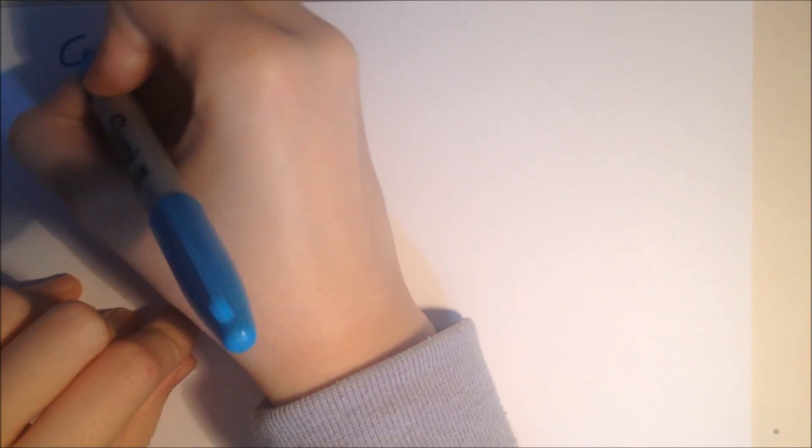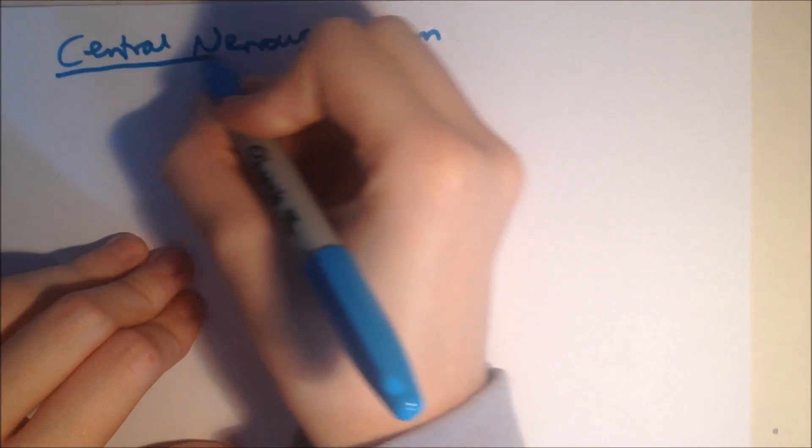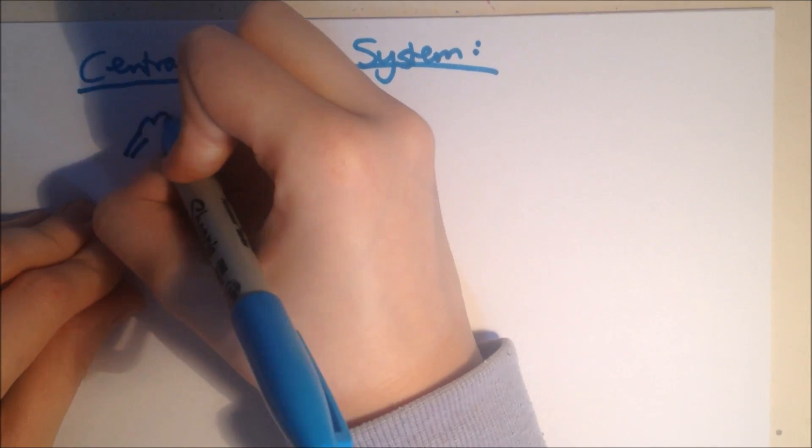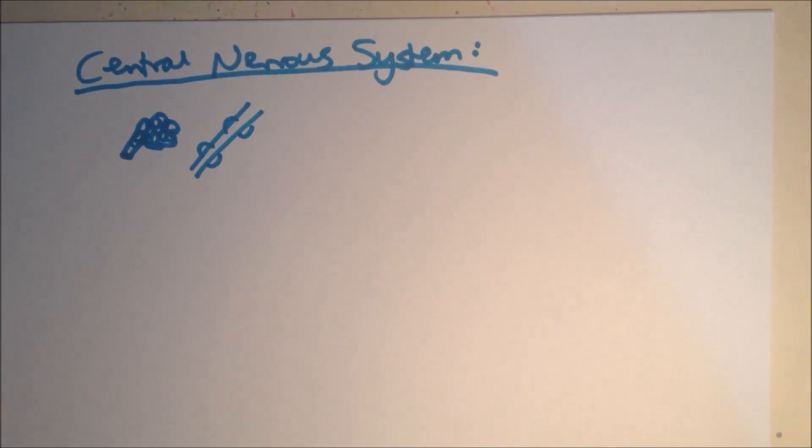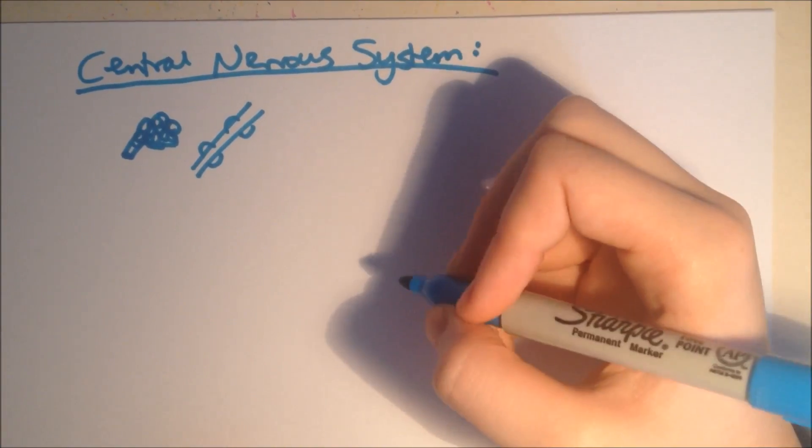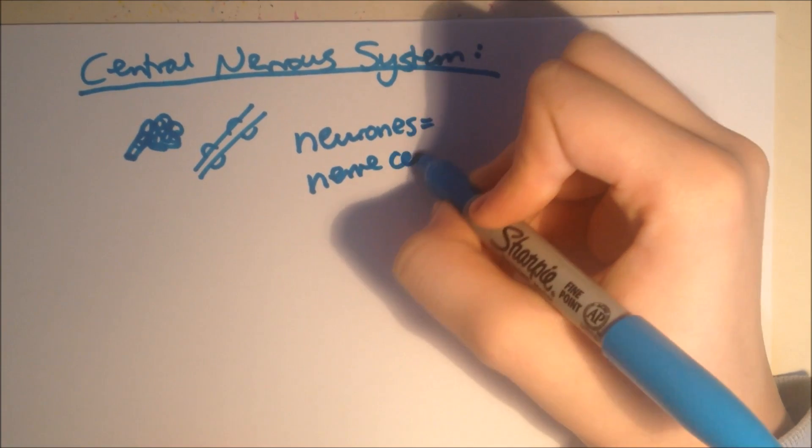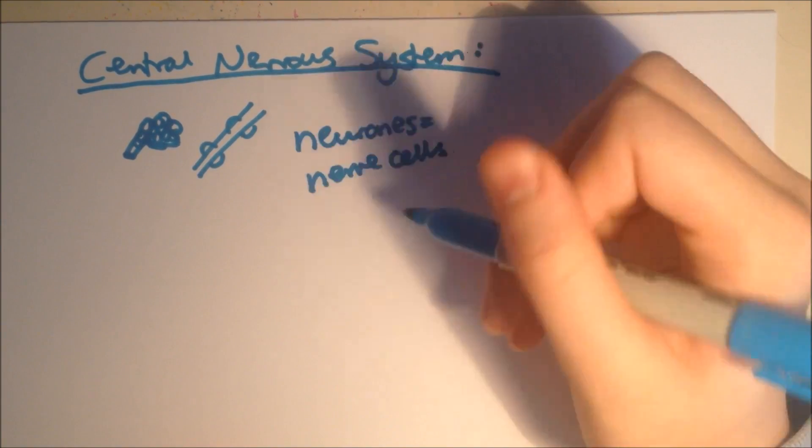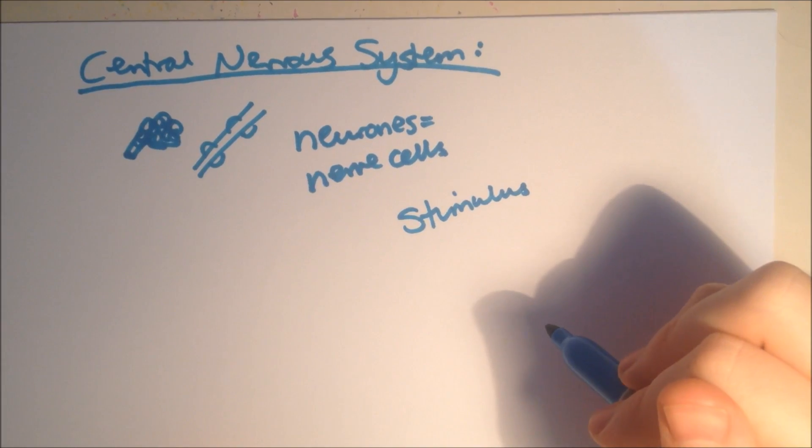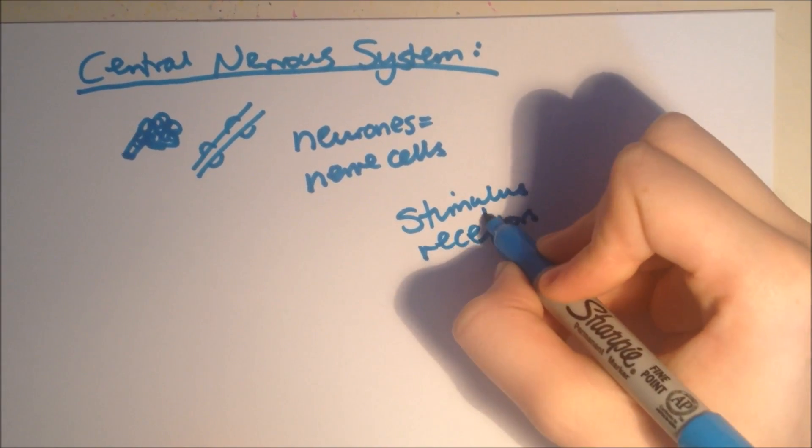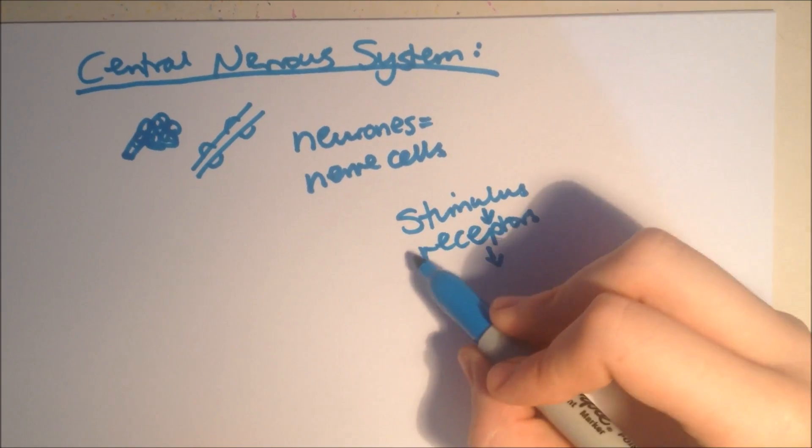Okay, so we're on to our next section, which is the central nervous system. The central nervous system consists of the brain, the brain and the spinal cord. And it's made up of three types of neurons, which means nerve cells, which are sensory, relay and motor. And when you detect a change in the environment, which is the stimulus, then the sensory neurons carry the information from receptors to the CNS. So, stimulus, receptors, sensory neuron, CNS,